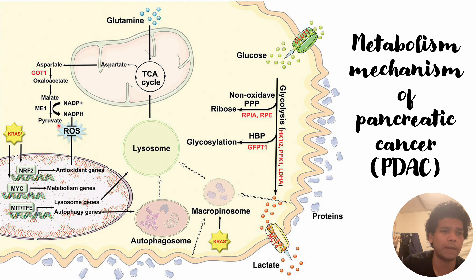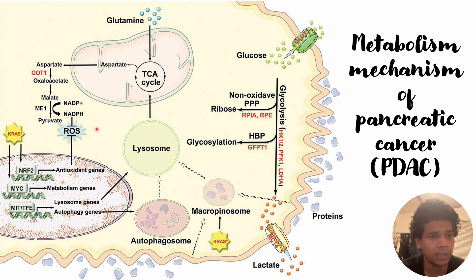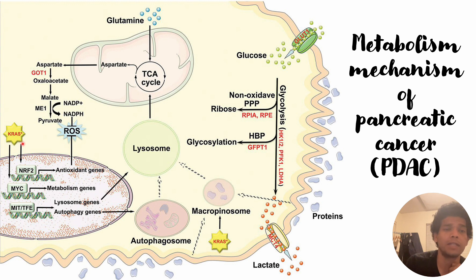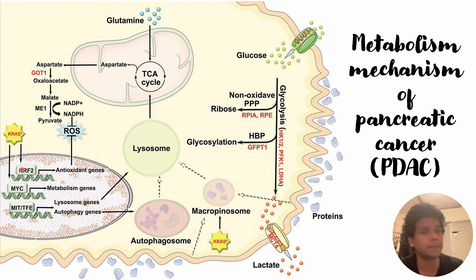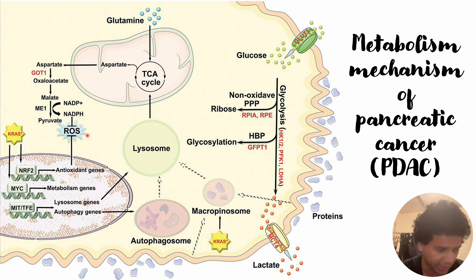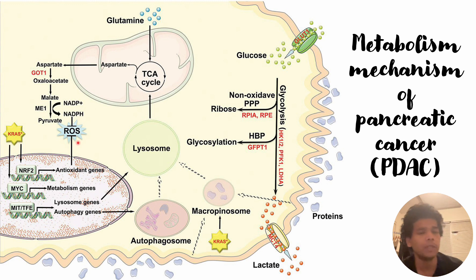This reprogramming leads to pyruvate formation, and that pyruvate formation leads to an increased amount of reactive oxygen species (ROS). In order to maintain redox stability, another mutation related to MYC transcription factors occurs, specifically the upregulation of NRF2. This NRF2 upregulation, discussed in a previous video, controls the ROS present within the cells and also upregulates antioxidant genes to maintain redox balance.